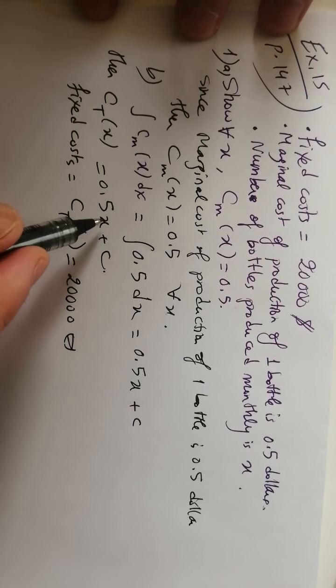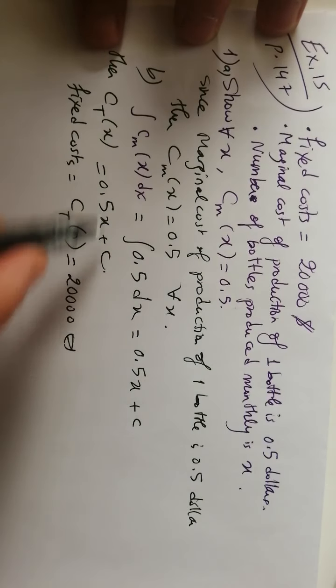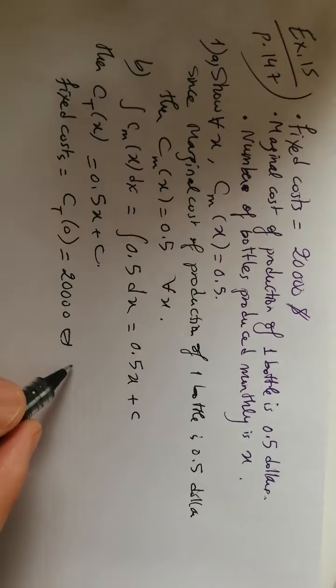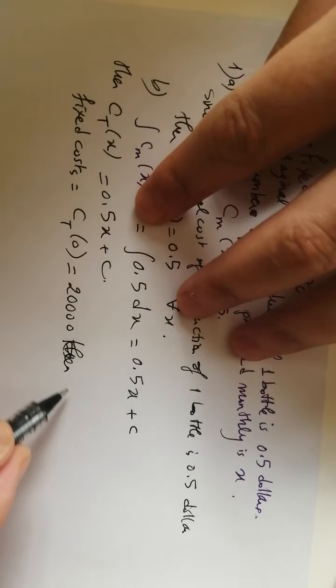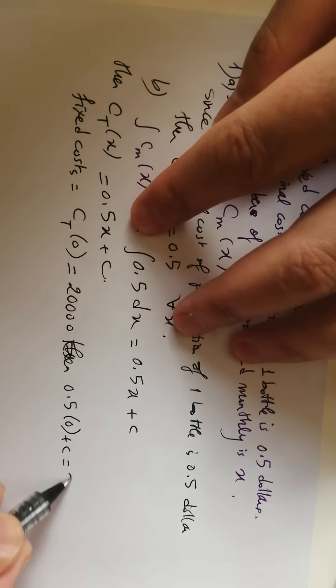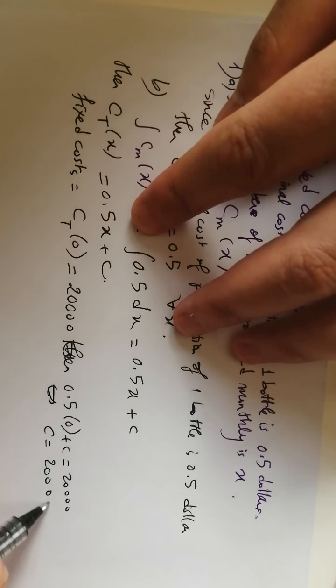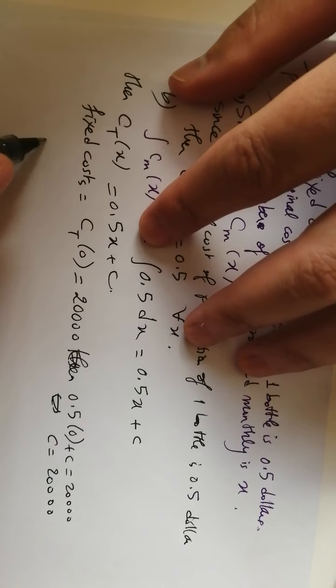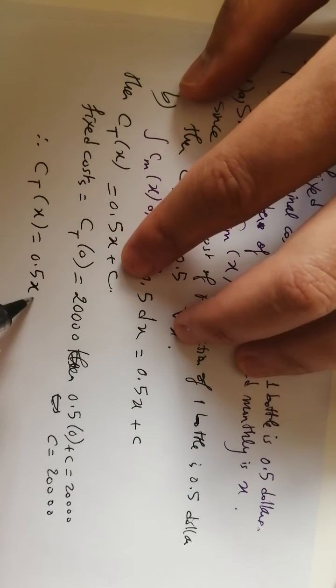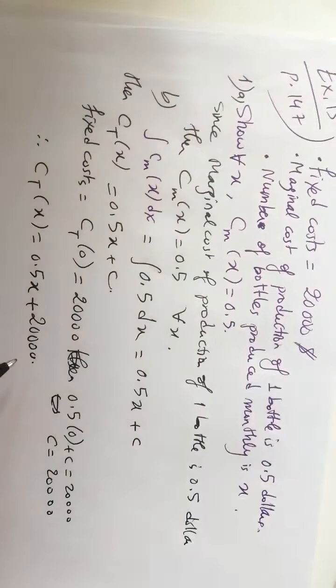Therefore, if I substitute 0 for x, I get CT of 0 equals 20,000. Substituting into the equation: 0.5(0) plus C equals 20,000, which means C equals 20,000.